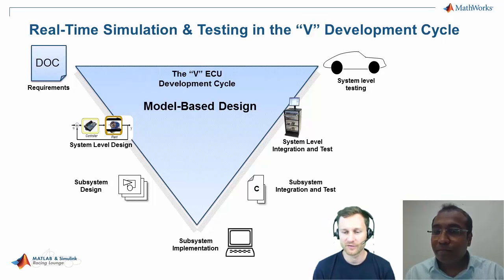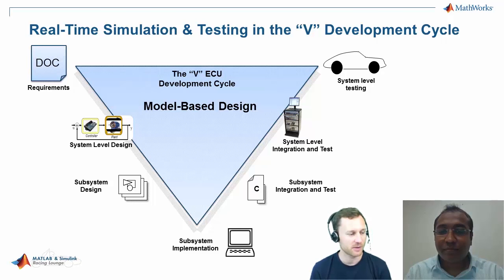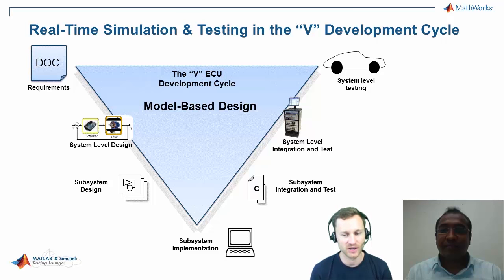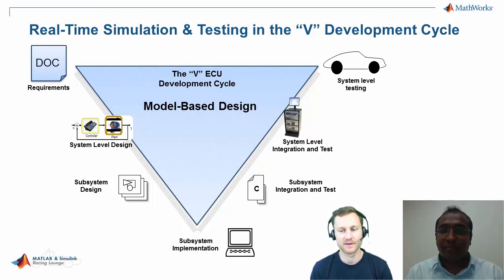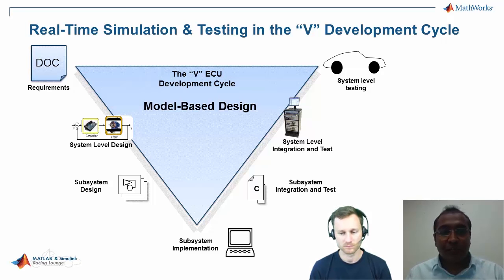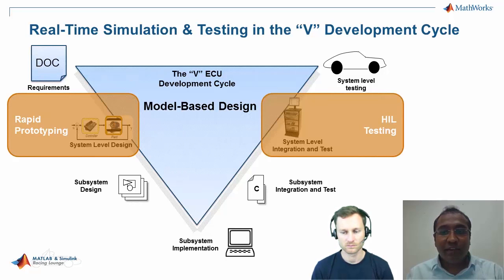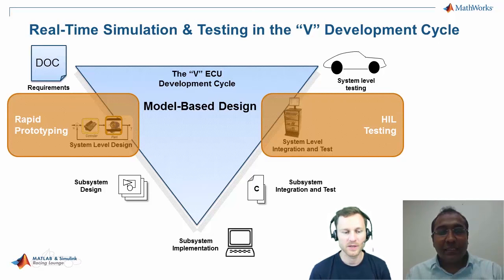Frequent viewers of the Racing Lounge will recognize the V-diagram — we've drawn it on a whiteboard before, but this illustration is much nicer and explanatory. For you guys it's exactly the same process. We can apply real-time simulation concepts in two places: during the development phase at system level design, that's called Rapid Prototyping; and during the testing phase at system level integration and test, that's called HIL testing — Hardware In the Loop.